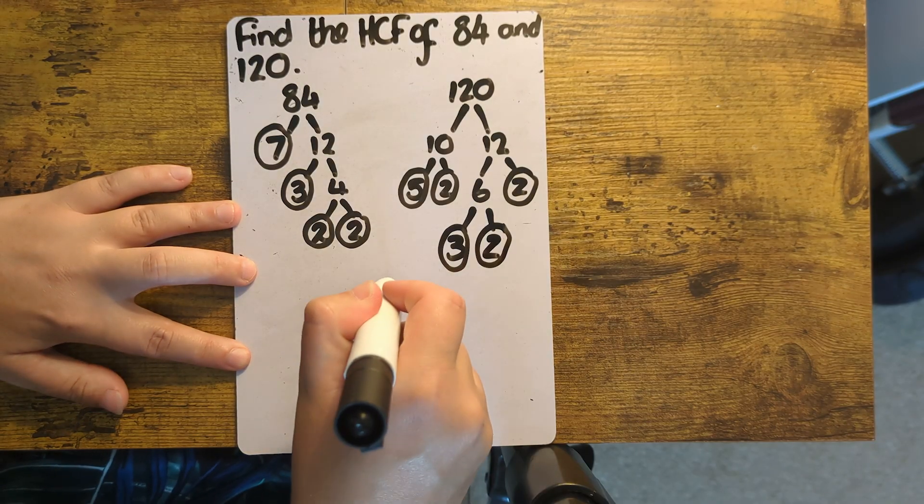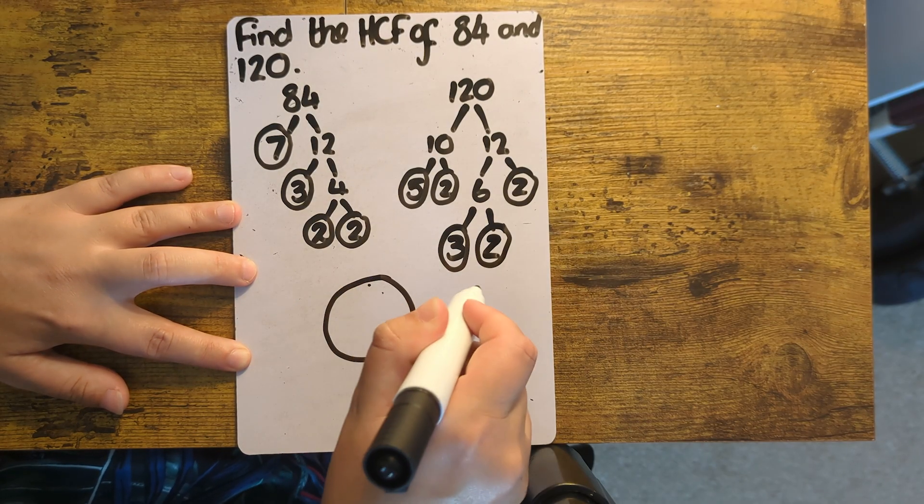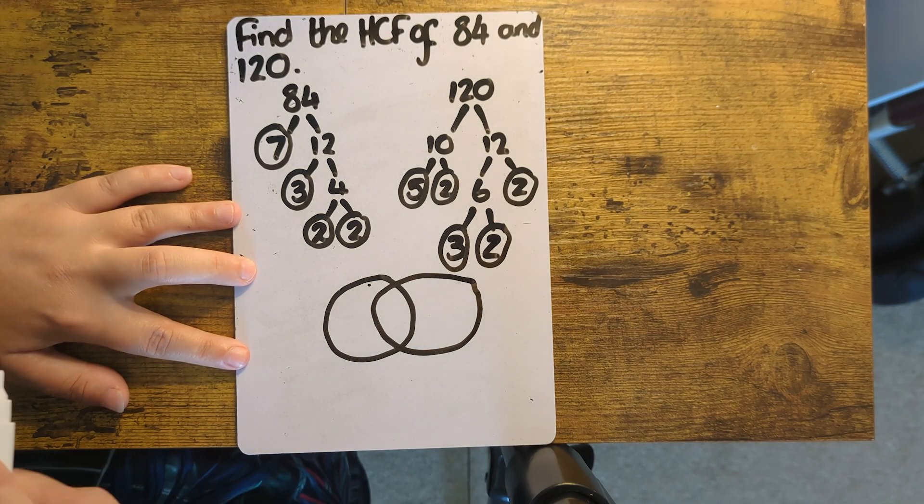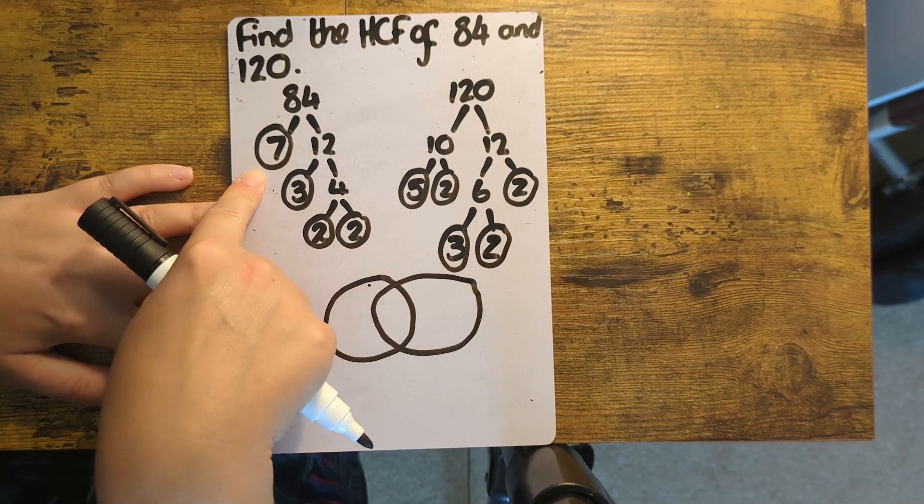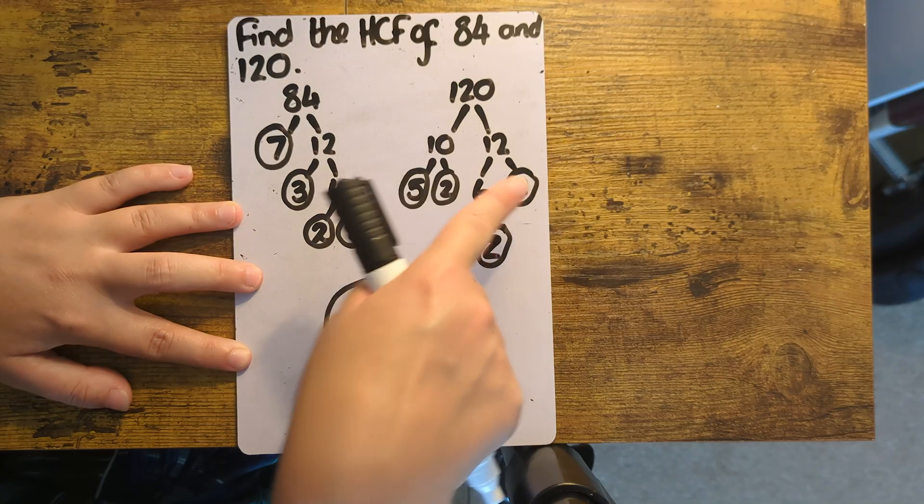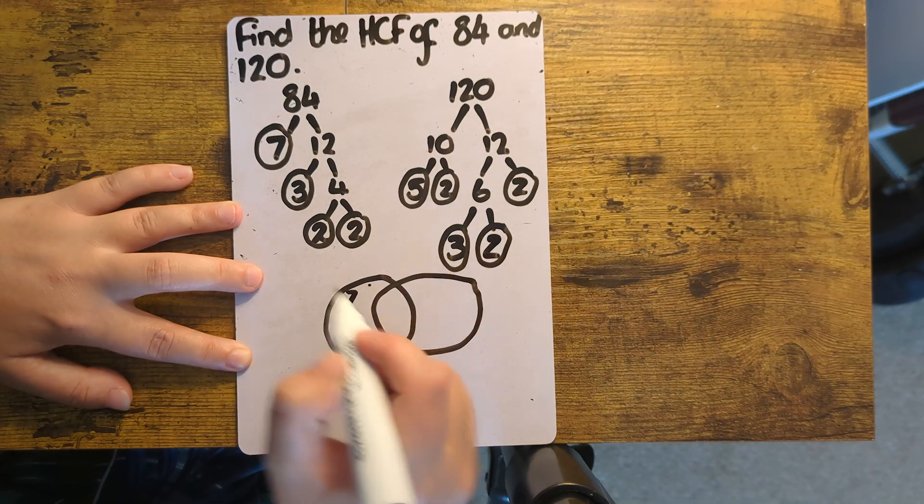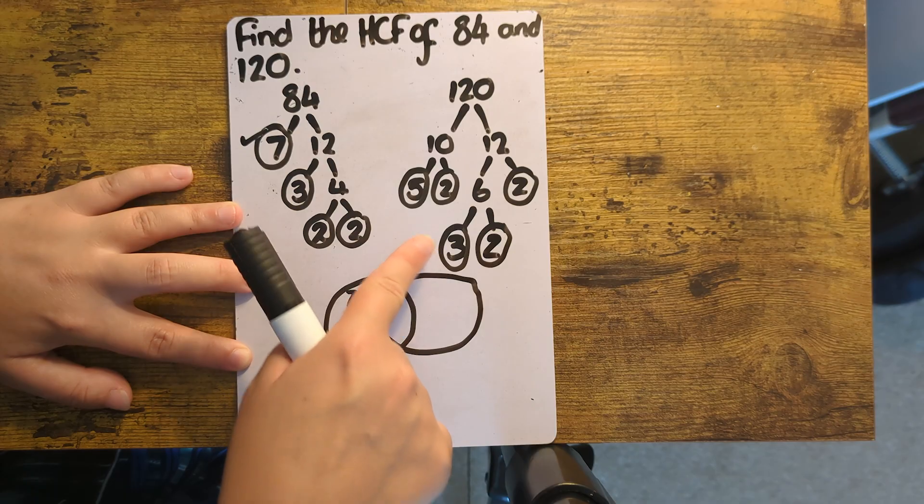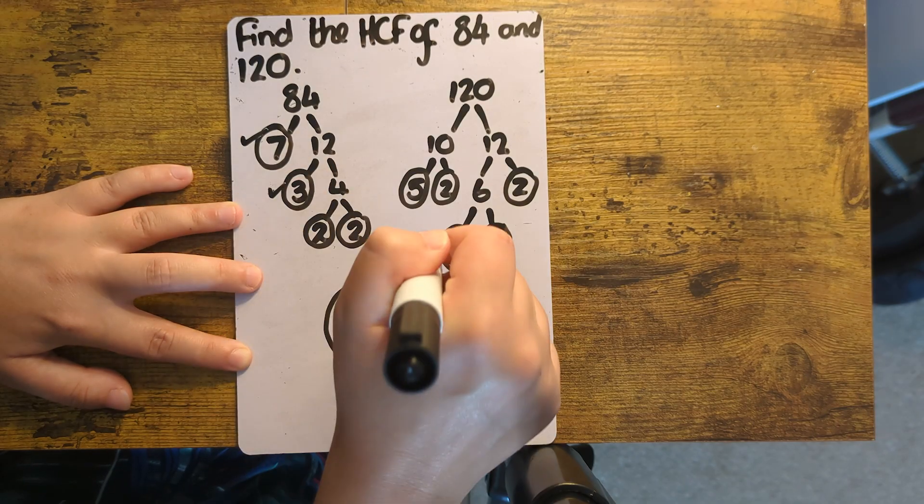I'm going to do my overlapping circles again and start pairing off the numbers. So this 7 can't be paired with another 7 on the 120 side, so that goes on the left-hand side. This 3 can be paired up with this 3 over here, so that one goes in the middle.